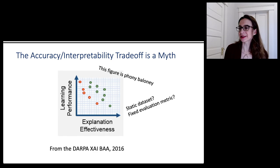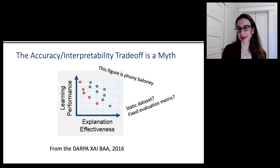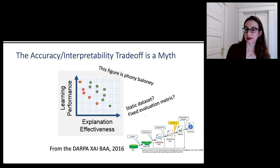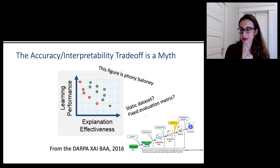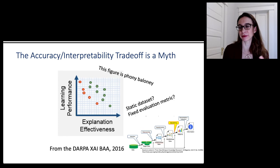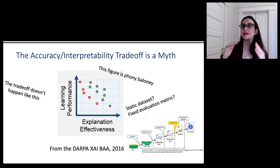Even if they had quantified everything and there was an actual problem involved, there's a whole problem with this setup because it looks like they're working with a static dataset and a fixed evaluation metric. But that's not the way we typically do data science. When we do data science, we follow a process — like the KDD process, the knowledge discovery in databases process. If you have better understanding, you can actually go back and do a better job fixing the dataset and fixing the evaluation metric. So explanation effectiveness leads to better learning performance, not worse, if you consider the whole cycle.